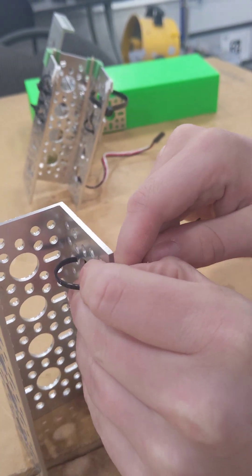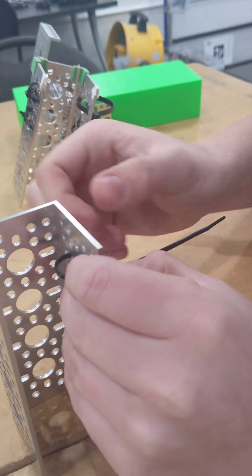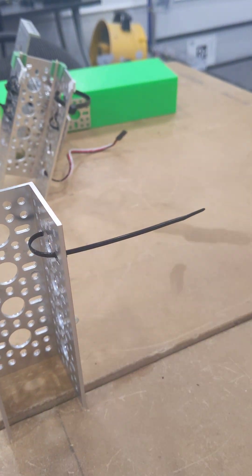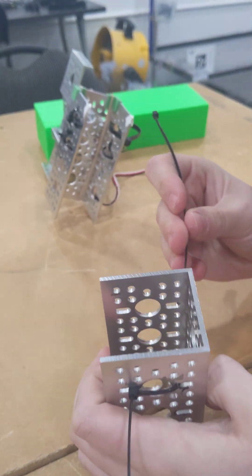Then from there you just do it to your right length. It will take a bit of finagling, just getting the right grip on it. And then you want to repeat it on all four sides.